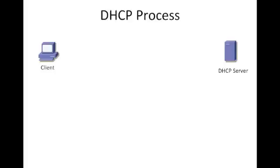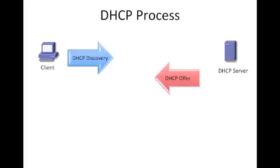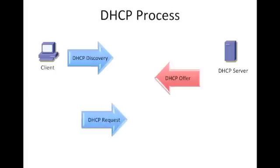Let's review real quick how the DHCP process works. There are really four things that happen. First, the client sends out a DHCP discovery in the form of a broadcast, and then your DHCP server responds with a DHCP offer. Your client then accepts that by issuing back a DHCP request for the address that was offered, and then the DHCP server sends back an acknowledgement saying yes, you can use that, and then it's installed in its database.